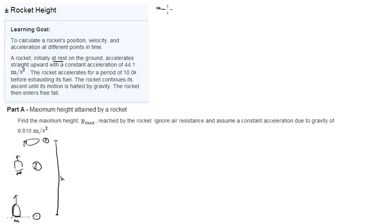We're given the acceleration from 1 to 2 is 44.1 meters per second squared. And the acceleration from 2 to 3 is gravity, which is negative 9.81 meters per second squared.